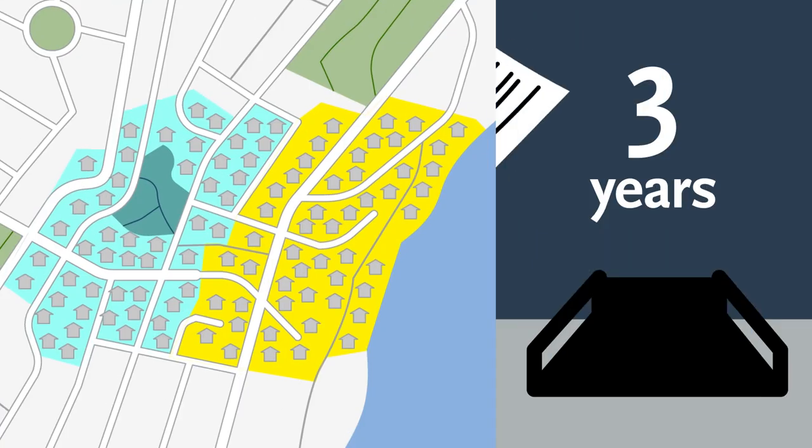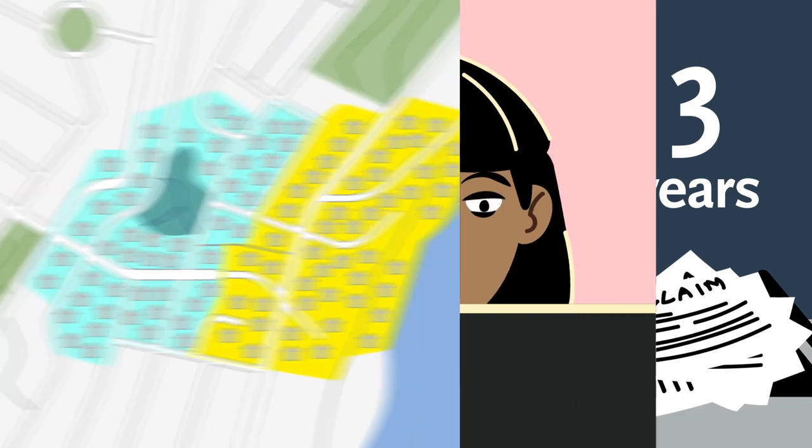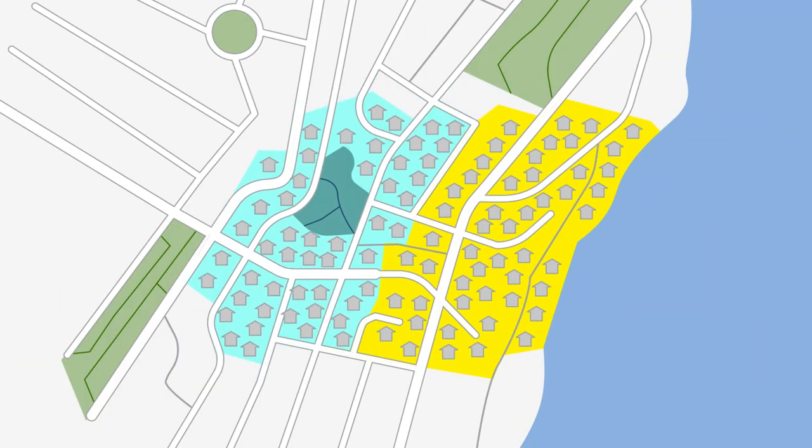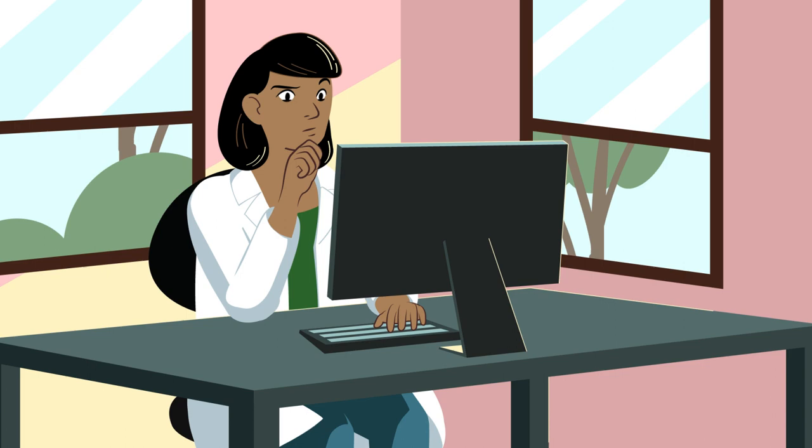You track the insurance claims that are filed for almost three years, and you're shocked by your results. People living farther away from the coast were actually more likely to file an insurance claim for flood damage. How could this have happened? Is everything you thought you knew about the risk of flooding wrong?